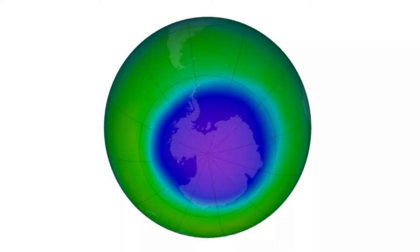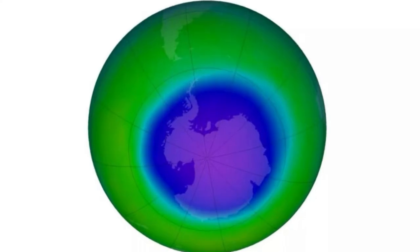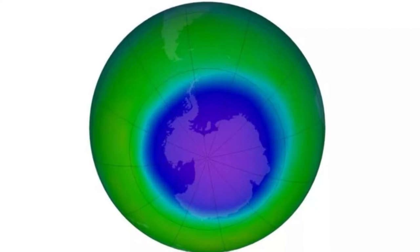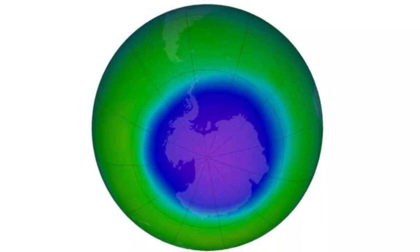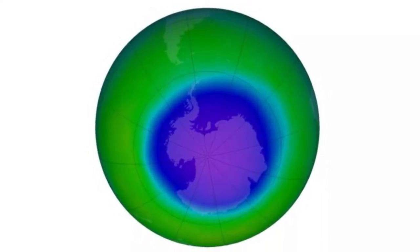Ozone is composed of three oxygen atoms and makes up very little of our atmosphere, but it has a huge impact on our planet. The blanket-like layer stretching over the globe absorbs the most harmful ultraviolet, UV, radiation from the sun, shielding Earth's life.